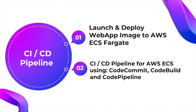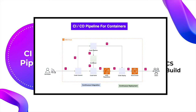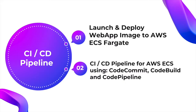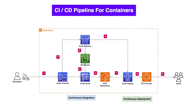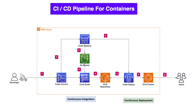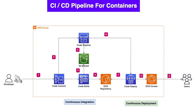Welcome back, guys, and thank you for keep watching. Today's tutorial will be divided into two main parts. The first part, we're going to launch and deploy a web app image to AWS ECS Fargate. On the second part, we're going to create a CI/CD pipeline for AWS ECS using CodeCommit, CodeBuild, and CodePipeline, and eventually get this CI/CD pipeline for container architecture working for us.